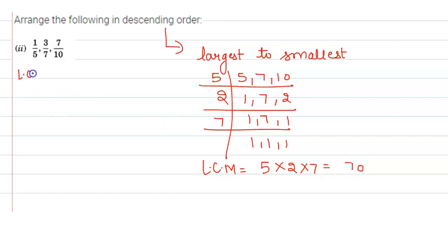So our LCM is 70. Now make the denominator same. How? By dividing the LCM by the denominator, and the answer obtained will be multiplied by the numerator and denominator both. So here we have 1 upon 5. 70 divided by 5 is 14.